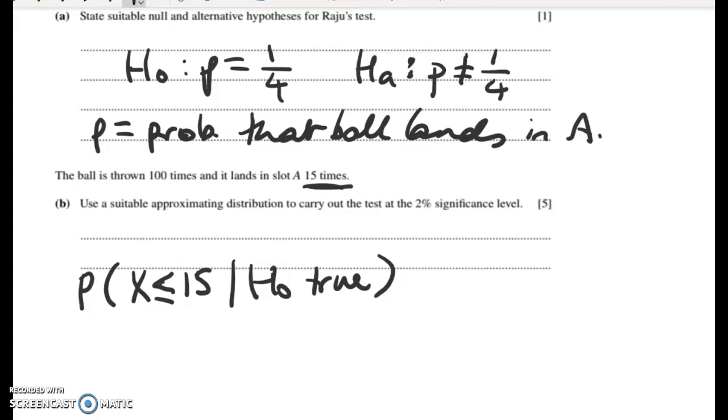But because it's a two-tailed test, we're saying we also need to add in the probability of getting something at the other end, so the probability that X is greater than or equal to 85. And we went over that when we first learned how to do the binomial distribution tests. But that's not exactly how we're going to do it here, because we don't want to have to work out 15 binomial probabilities here, and then another 15 up here.